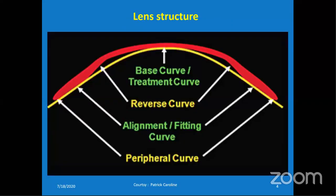This is the lens structure of the ortho-K lenses. It is based on the reverse geometry design. The yellow color is the cornea and the red one is the design of the ortho-K lenses. In reverse geometry design, the center of the lens will be flat and the mid-periphery will be steep. But in conventional design, the center will be steep and the mid-periphery will be flat. There are four important curves in this reverse geometry design: first is base curve, also called treatment curve; second is reverse curve; third is alignment curve or fitting curve; fourth is the peripheral curve.